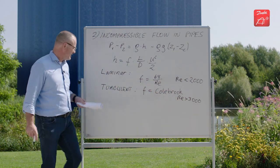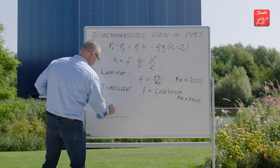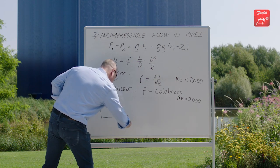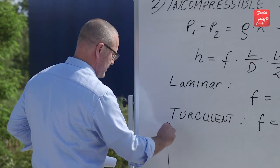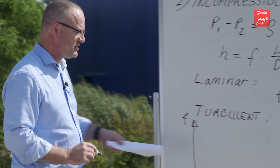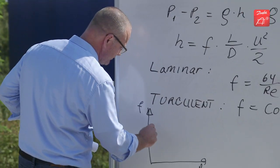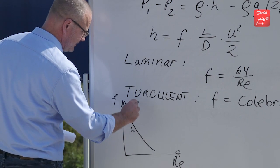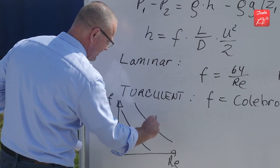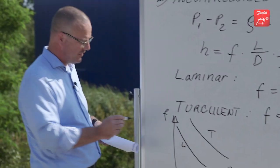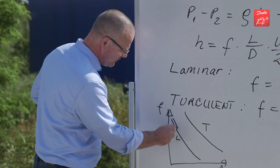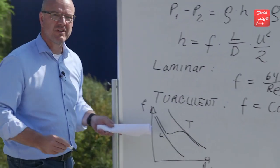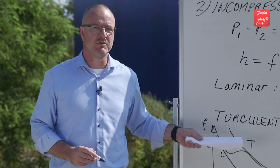The way we solve that is that if you look at the friction factor as a function of the Reynolds number and this is the laminar curve and this is the turbulent curve then the resulting curve we have is a curve where we create a smooth transition between the two.